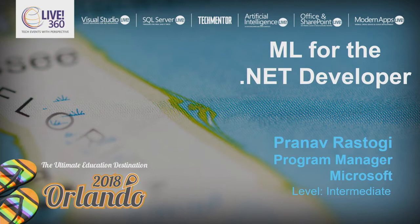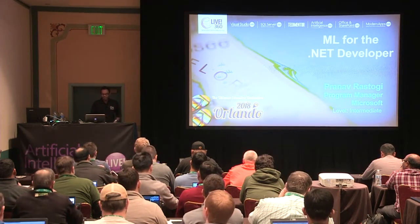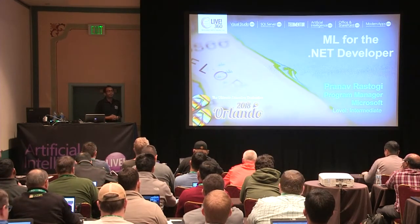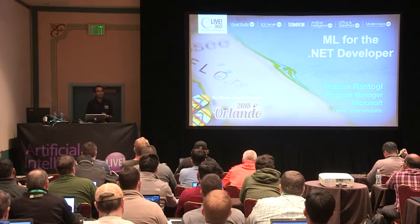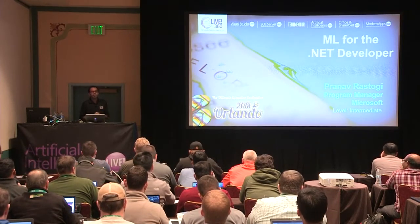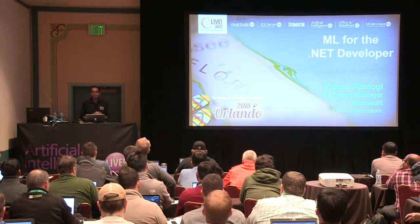All right, let's get started. Thank you so much for coming to this talk in the afternoon. It's a cold day and I have this AC blowing air right on top of me — the only time I forgot my jacket, which I got from Seattle. My name is Pranav Rastogi. I'm a program manager at Microsoft. My focus areas are around effectively making AI and machine learning accessible to developers. My historical background has been around building web dev stacks for application development with .NET and ASP.NET.